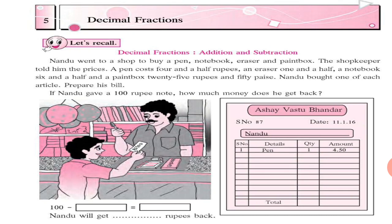Nandu went to a shop to buy a pen, notebook, eraser and paint box. The shopkeeper told him the prices. A pen costs 4.5 rupees, an eraser 1.5, a notebook 6.5 and a paint box 25 rupees and 50 paise. Nandu bought one of each article. Prepare his bill. If Nandu gave a 100 rupee note, how much money does he get back? In the picture, you can see Nandu paying rupees 100 note to the shopkeeper. So, how much will he get back?